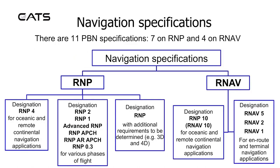Navigation Specifications: There are 11 PBN Specifications — 7 on RMP and 4 on Area Nav. RMP is subdivided into: designation RMP4, designation RMP2, RMP1, advanced RMP, RMP approach, RMP as required approach, RMP 0.3, and additionally a designation of RMP where additional requirements to be determined,